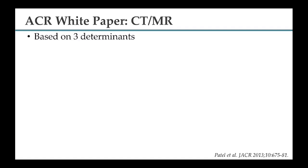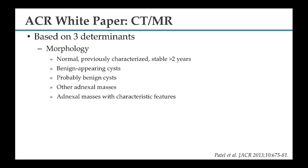The ACR white paper basically took the SRU approach and applied it to CT and MRI. It also has three determinants. For morphology, it defines normal findings, previously characterized lesions, or lesions stable for more than two years — usually requiring no further action. Then there are four categories: benign-appearing cyst, probably benign cyst, other adnexal masses (most worrisome), and adnexal masses with characteristic features such as dermoid.